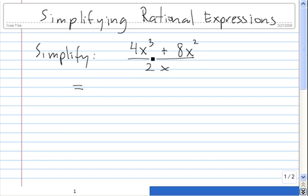We notice that the greatest common factor between 4x³ and 8x² is 4x², so let's take that out.